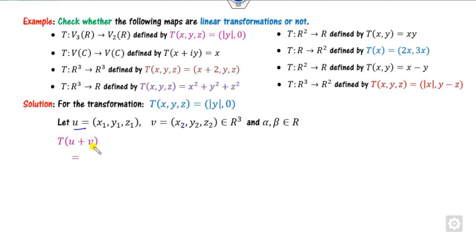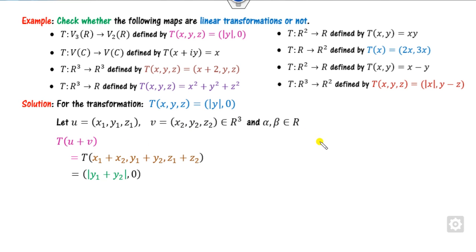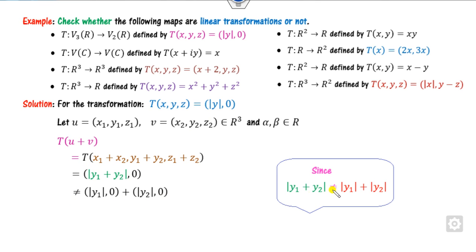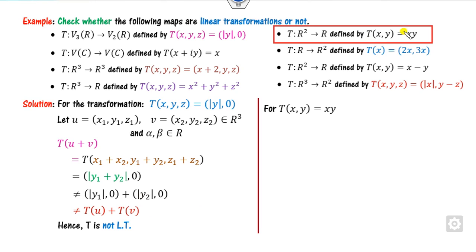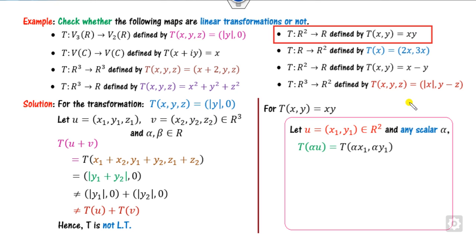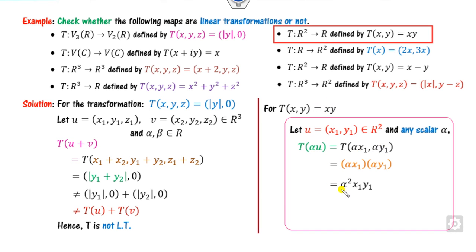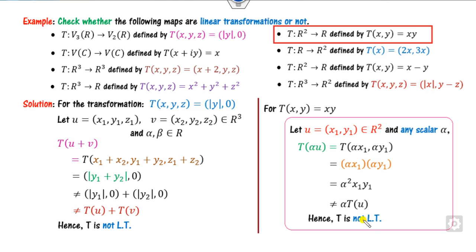Starting with U and V from the domain and computing T of U plus V: the value involves |x + y|, which is always less than or equal to |x| plus |y|. Since we need equality and it can never hold, this is T(U) but not equal to T(U) plus T(V). Hence it is not a linear transformation.